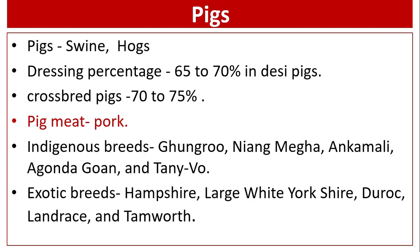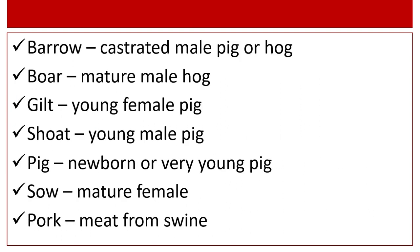Pigs — usually swine: dressing percentage is 65 to 70 percent in desi pigs and 70 to 75 percent in crossbred pigs. Pig meat is known as pork. Indigenous breeds include Ghungroo, Niang Megha, Agonda Goan, and Tenivo. Exotic breeds include Hampshire, Large White Yorkshire, Duroc, Landrace, and Tamworth.